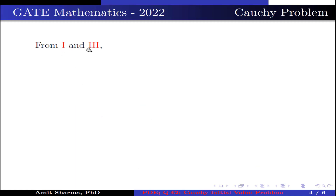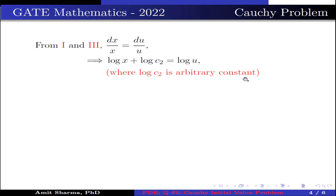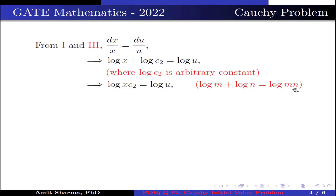From equations 1 and 3, we get dx/x = du/u. Integrating both sides, we get log(x) + log(c₂) = log(u), where log(c₂) is an arbitrary constant. This simplifies as log(x·c₂) = log(u), because log(m) + log(n) = log(m·n). Taking antilog on both sides, we get x·c₂ = u, which is further written as c₂ = u/x.